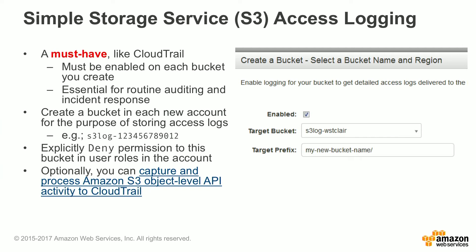What you want to do is create a bucket in each new AWS account just for the purpose of storing these access logs. Then use an explicit deny permission in this bucket for user roles in that account. This prevents users from deleting the logs in order to ensure they remain valid for an incident response investigation. Optionally, you can also capture and process Amazon S3 object-level API activity, such as what's recorded in these access logs, through CloudTrail as well.